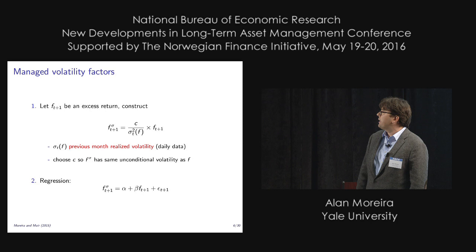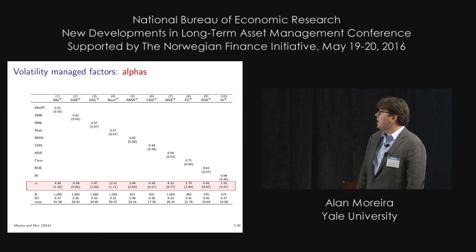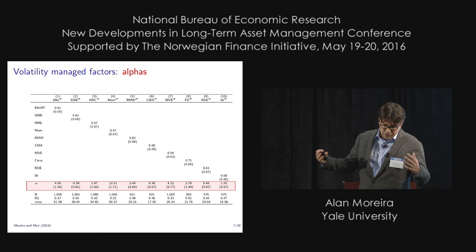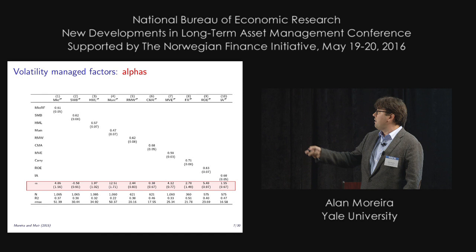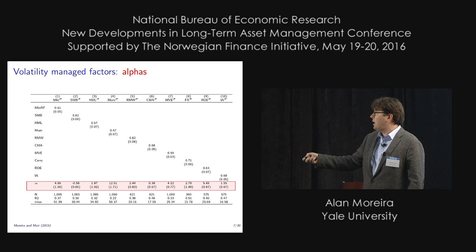Here is our main table. These are the volatility-managed factors done individually; later we go to the multi-factor approach. You always have kind of a lower beta — you always reduce your exposure relative to the original factor. And you mostly have high alphas, besides SMB which has a negative alpha. But SMB doesn't have a positive expected return in the sample anyway, so it's not clear what to make of that.